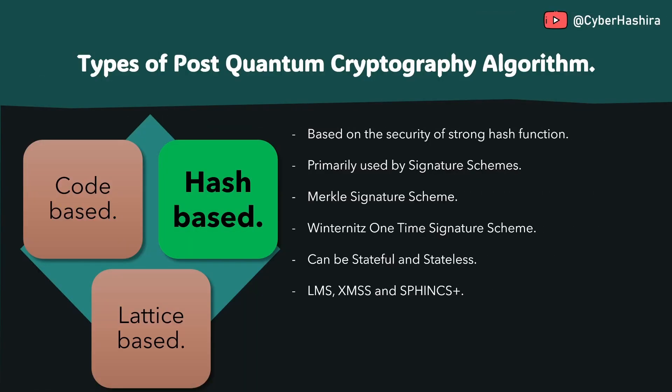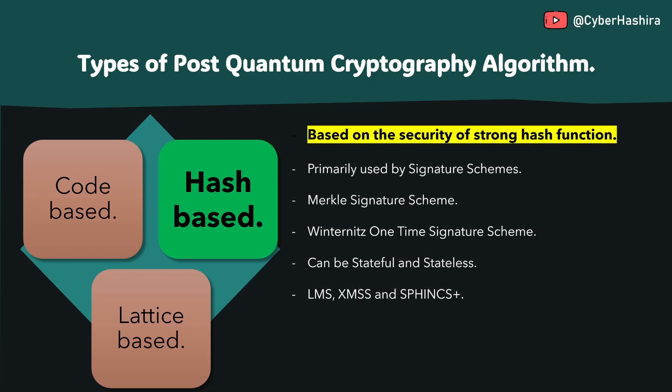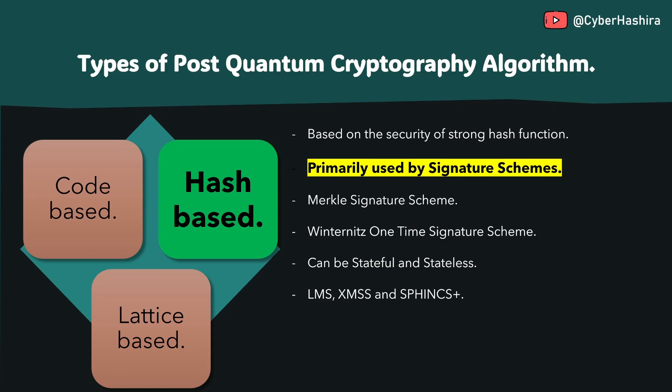The next type I'm going to discuss is hash-based cryptography. Hash-based cryptography becomes easier to understand once you grasp the concept of hashing. Hashing algorithms like SHA-256 or SHA-3 help verify data integrity by generating a fixed-length hash using a one-way function. The security of these hash functions depends on how difficult it is to reverse the hash and retrieve the original data. Because hash functions generate a fixed-length hash using a one-way function, they are well-suited for signature schemes. Unlike traditional methods that rely on hard-to-solve mathematical problems, hash-based signature schemes use hash functions as their building block. The Merkle signature scheme is a good example of that.